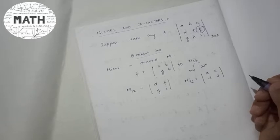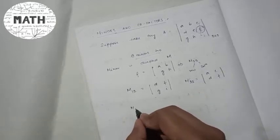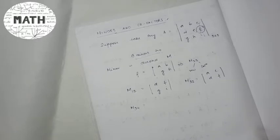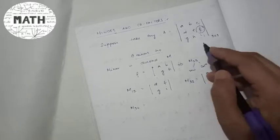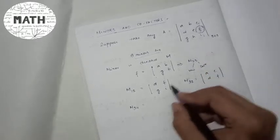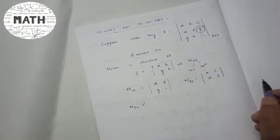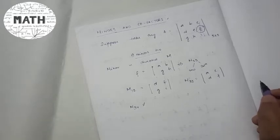If I say M₃₄, that means the third row and the fourth column — but there is no fourth column, so the minor does not exist.